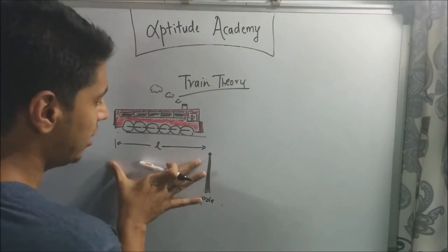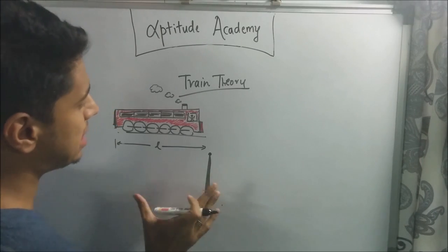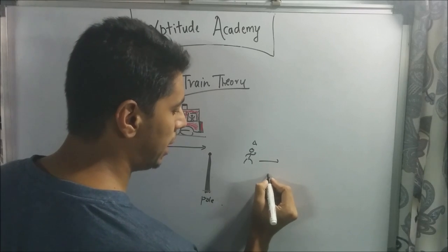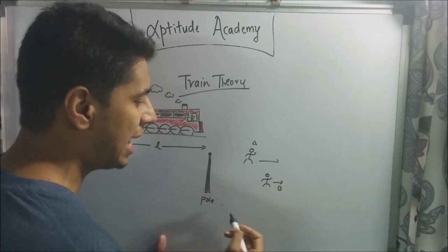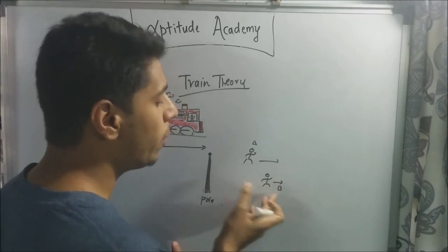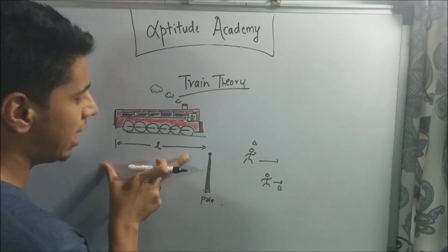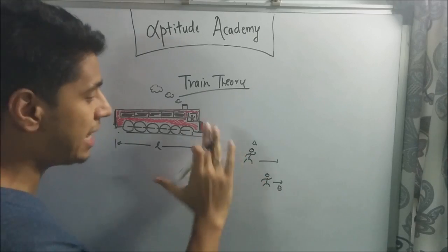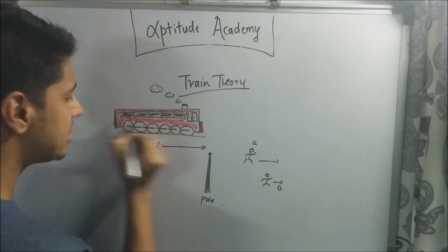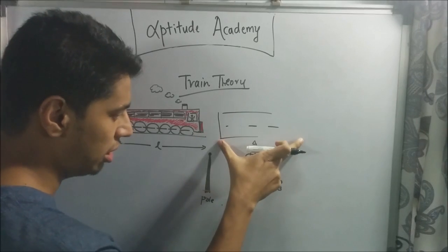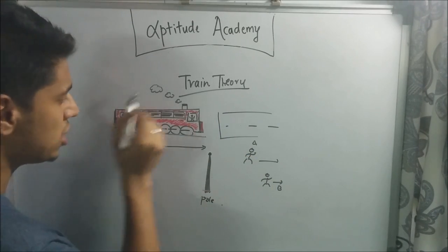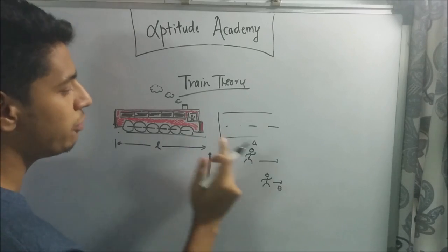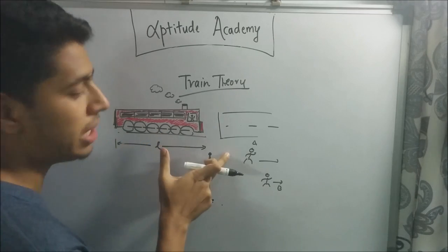Now for train theory: suppose we have a train of length L and a stationary pole. A very important concept is never look at the front edge of the train — always look at the back edge. The train has crossed the pole only when the back edge passes the pole. So the back edge has to travel a distance of L. Therefore, the time taken for a train of length L to cross a pole equals the time for the train to travel L meters.